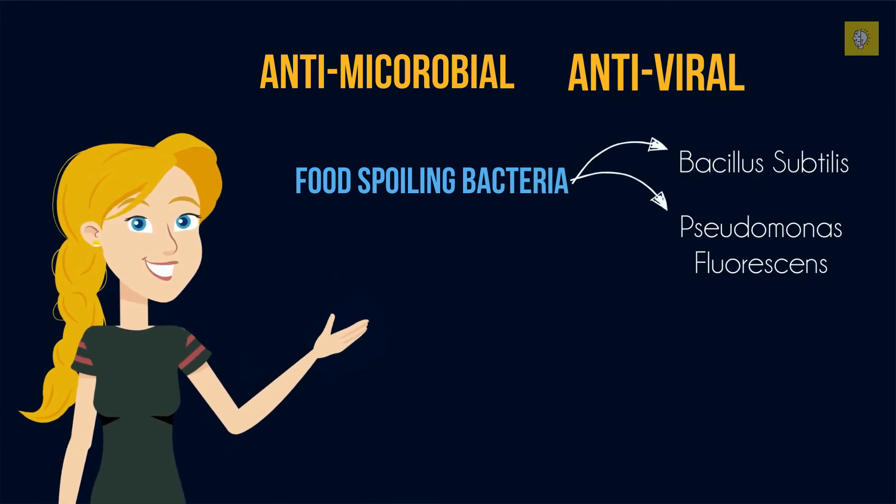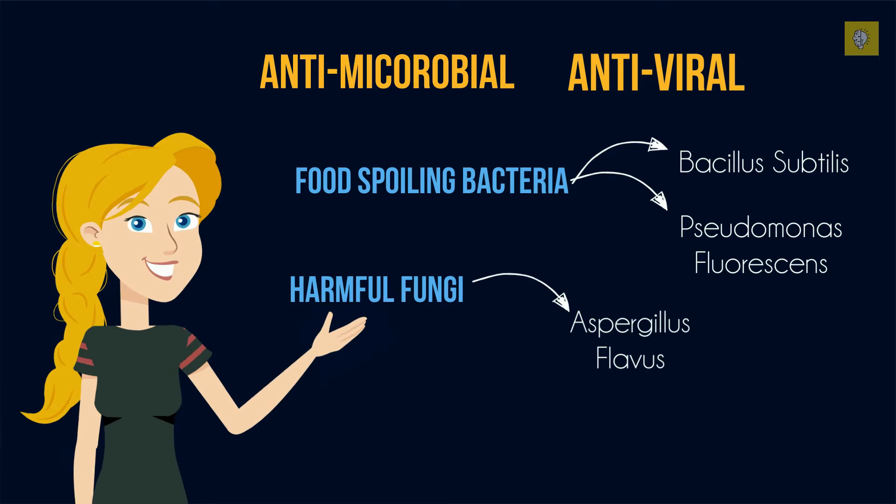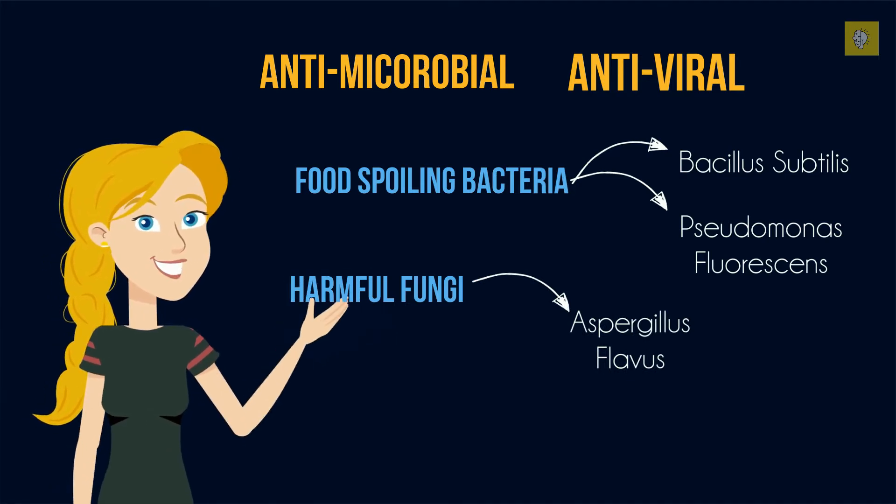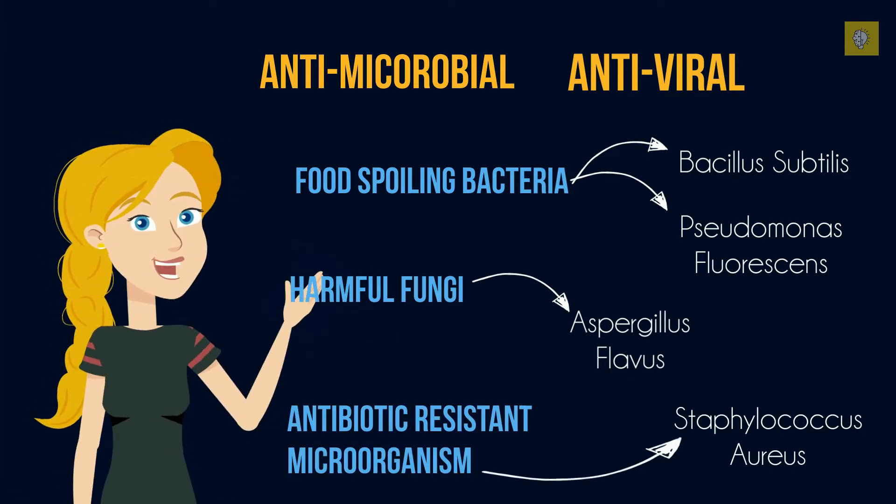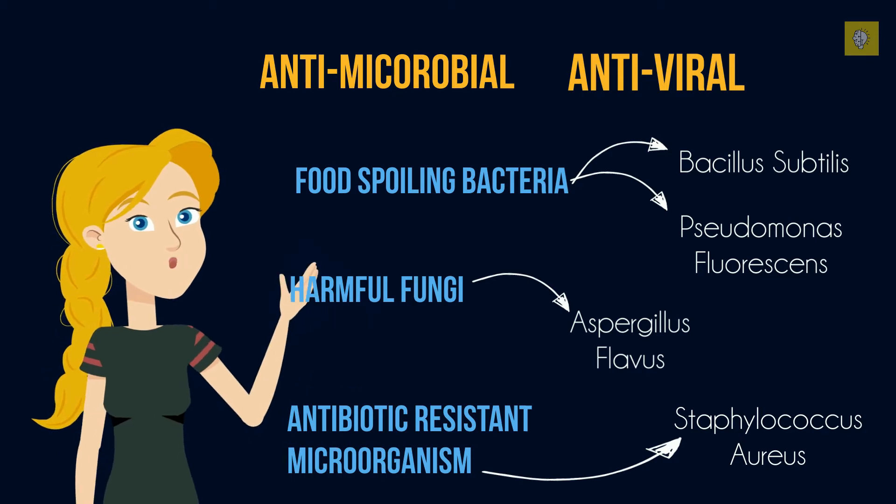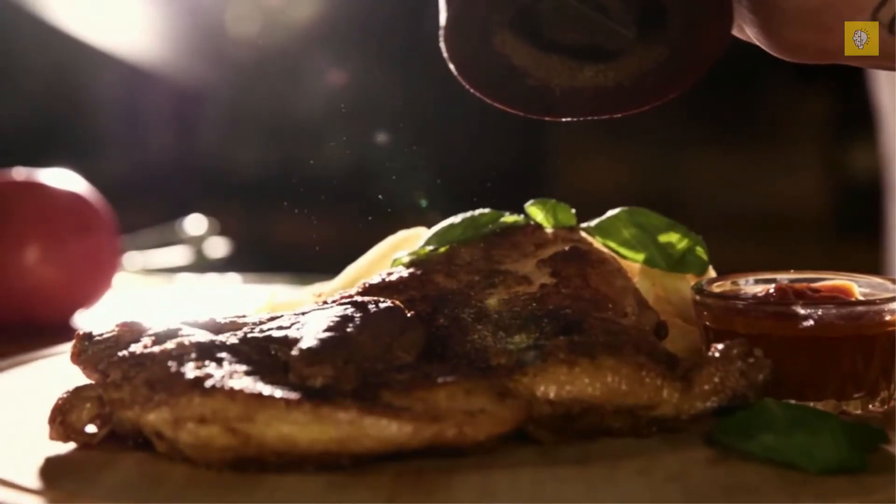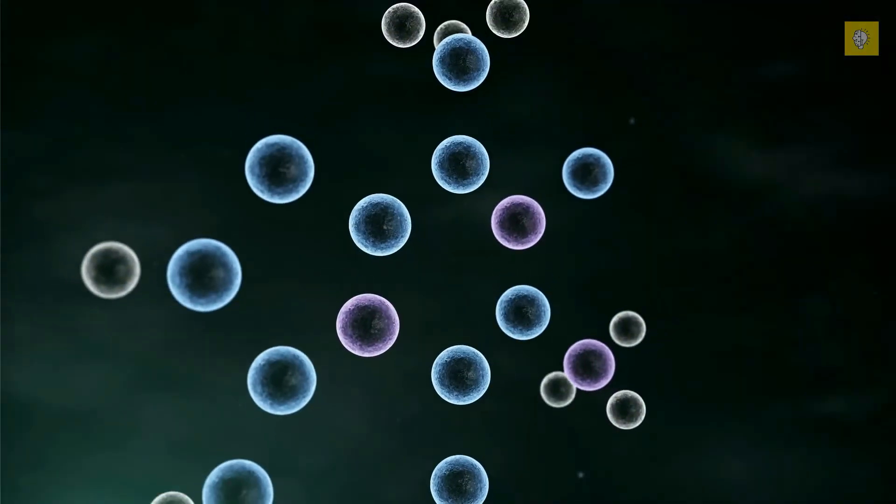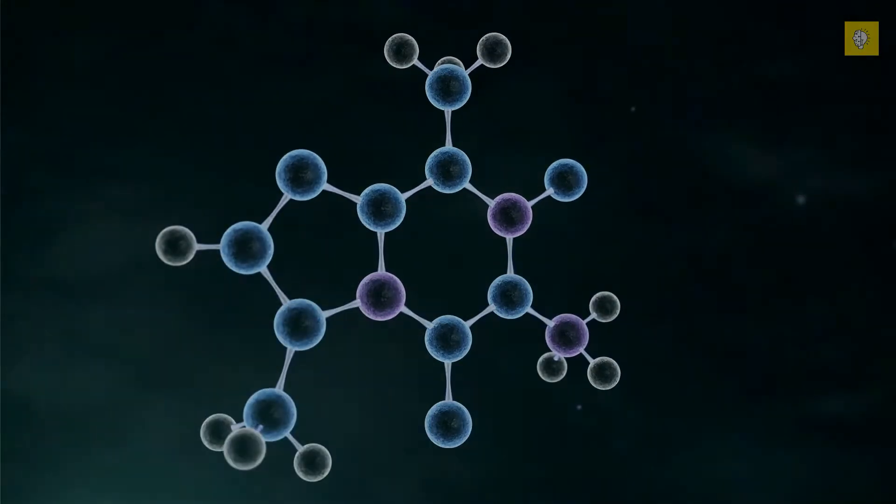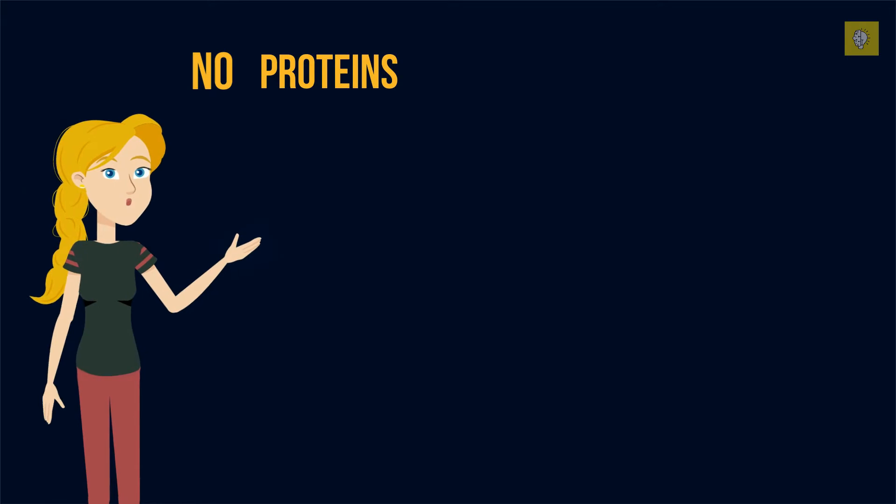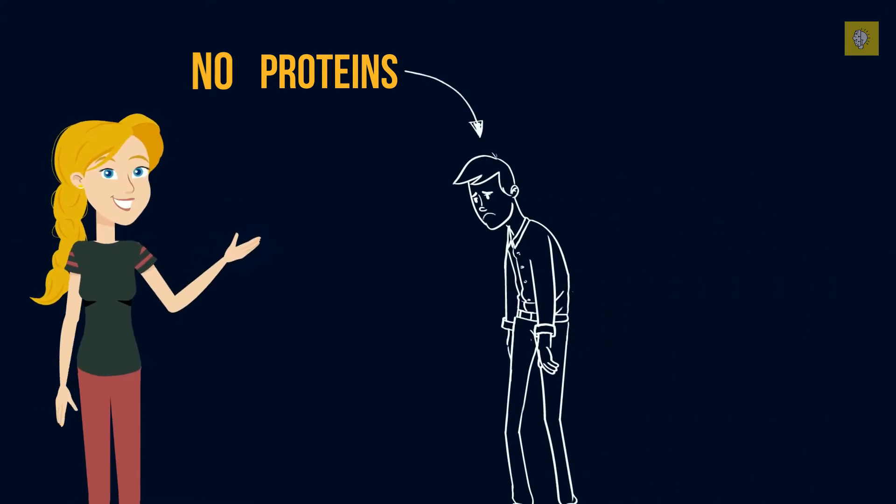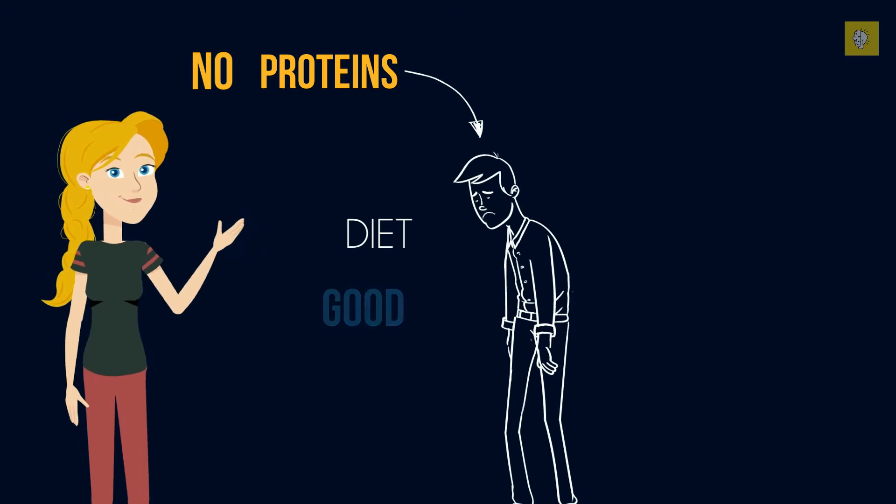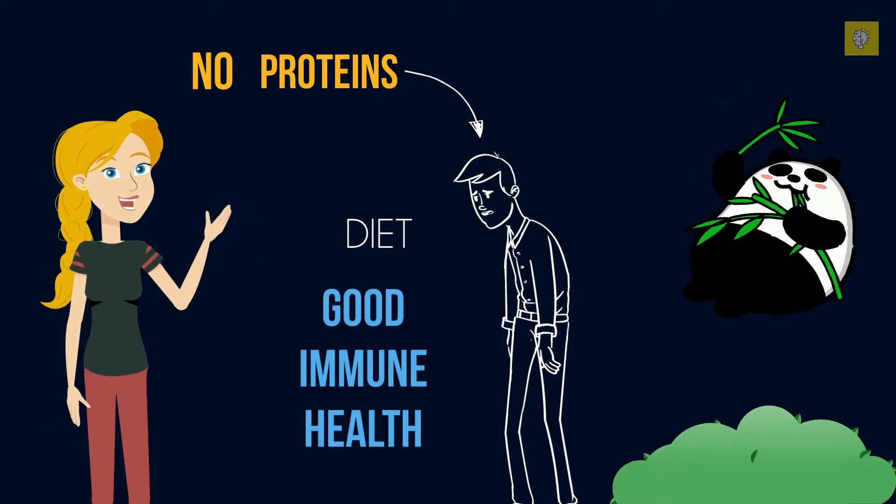Harmful fungi like aspergillus flavus and antibiotic-resistant microorganisms like staphylococcus aureus. Protein is also critical for immune health. The amino acids in protein help build and maintain immune cells, and skipping on these micronutrients may lower your body's ability to fight infections.